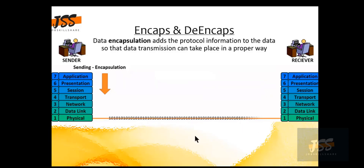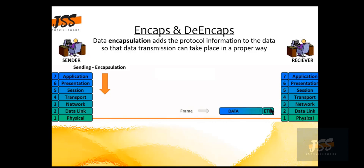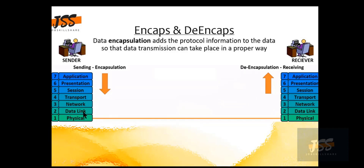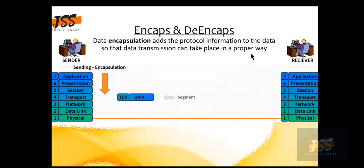On the other end, the same process happens but in the opposite direction, and the header information is removed or stripped off — this is called de-encapsulation. At the physical layer, data moves up to the data link layer where the Ethernet frame is processed. Then the IP header is read at the network layer, and the TCP header is de-encapsulated at the transport layer for proper end-to-end conversation.